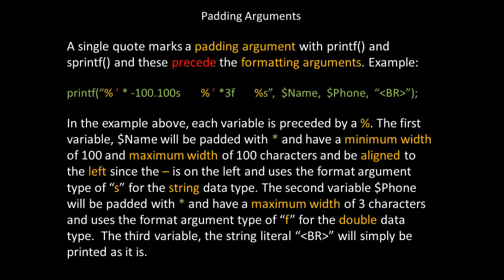In addition to formatting arguments in PHP, there are also padding arguments. A single quote marks a padding argument with printf and sprintf, and these precede the formatting arguments. For example, take a look at the following line of code — printf — and if you look at the arguments in parentheses, you'll see colored red a single quote mark, and that single quote mark indicates a padding argument. In this example, the padding argument is the asterisk.